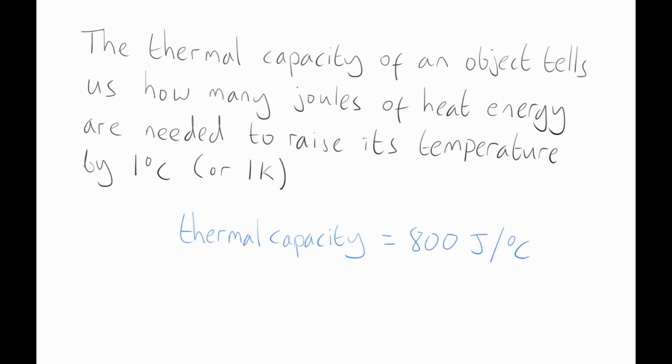For example, if we had an object and its thermal capacity was 800 joules per Celsius, that would mean that if we wanted to raise its temperature by 1 degree Celsius, we would have to give it 800 joules of heat energy. Also, if we wanted to reduce the temperature by 1 degree Celsius, we would have to remove 800 joules of heat energy from it.